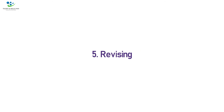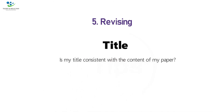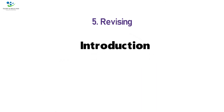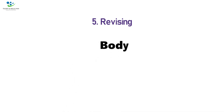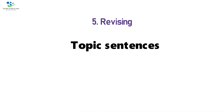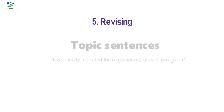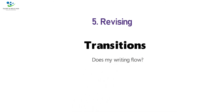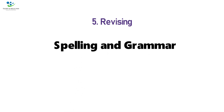Step six: revising. Some tips on revising — Title: Is my title consistent with the content of my paper? Introduction: Did I appropriately introduce my review? Thesis: Does my review have a clear claim? Body: Is the organization clear? Have I provided headings? Topic Sentences: Have I clearly indicated the major ideas of each paragraph? Transitions: Does my writing flow? Conclusion: Do I provide sufficient closure? Spelling and grammar: Are there any major spelling or grammatical mistakes?